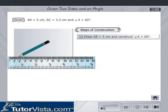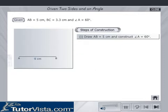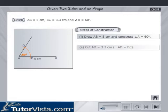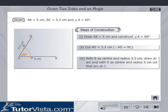Draw AB is equal to 5 cm and construct angle A is equal to 60 degrees. Cut AD is equal to 3.3 cm since AD is equal to BC.